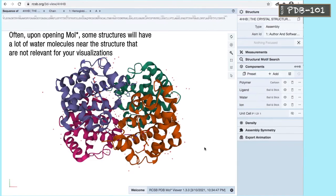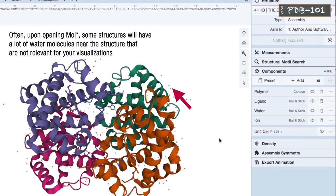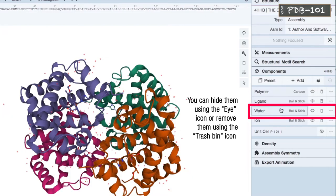Often, upon opening Molstar, some structures will have a lot of water molecules near the structure that are not relevant for your visualizations. You can hide them using the eye icon or remove them using the trash bin icon.